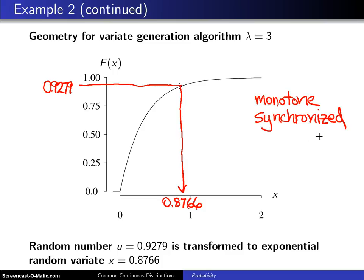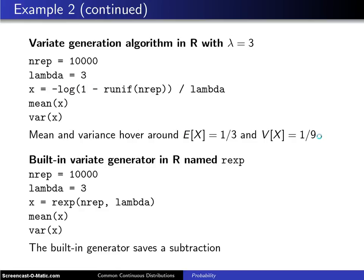Now, if you want to implement this in R, again with lambda equals 3, let's say we want to generate 10,000 random variates with lambda equals 3. Here is the inverse CDF formula from before: negative 1 over lambda times the natural log of 1 minus u.